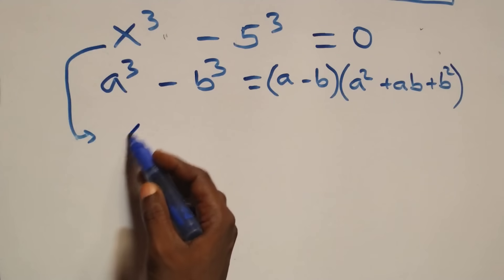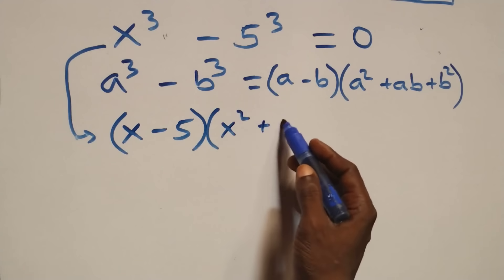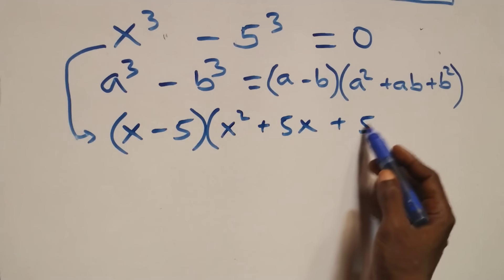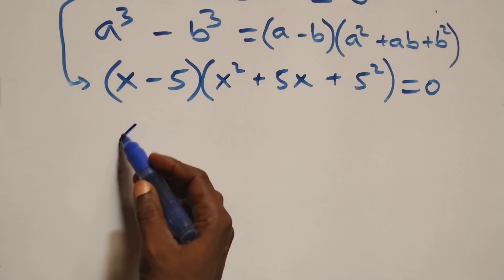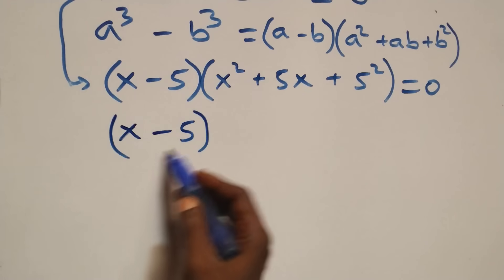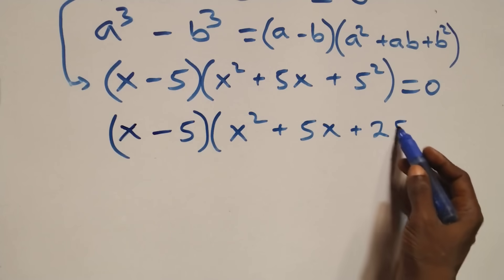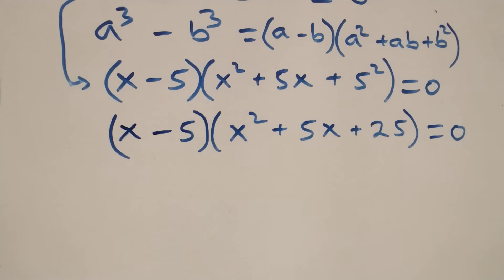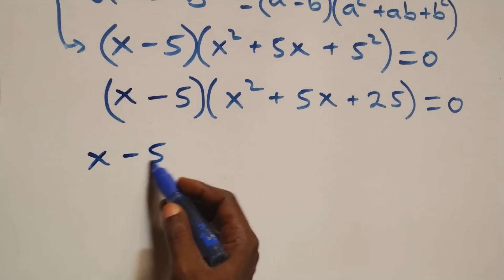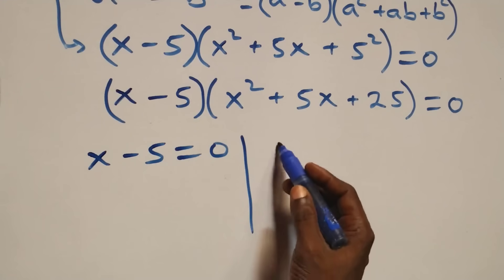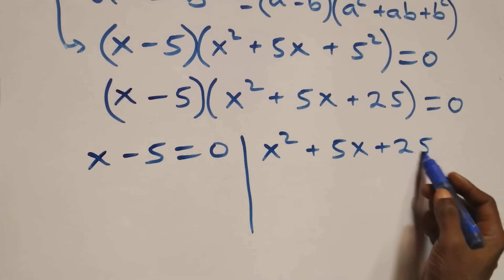For the second case, this follows the difference of cubes identity and becomes x minus 5, times x squared plus 5x plus 25, equals to 0. We then have two possible cases: x minus 5 equals to 0, or x squared plus 5x plus 25 equals to 0.